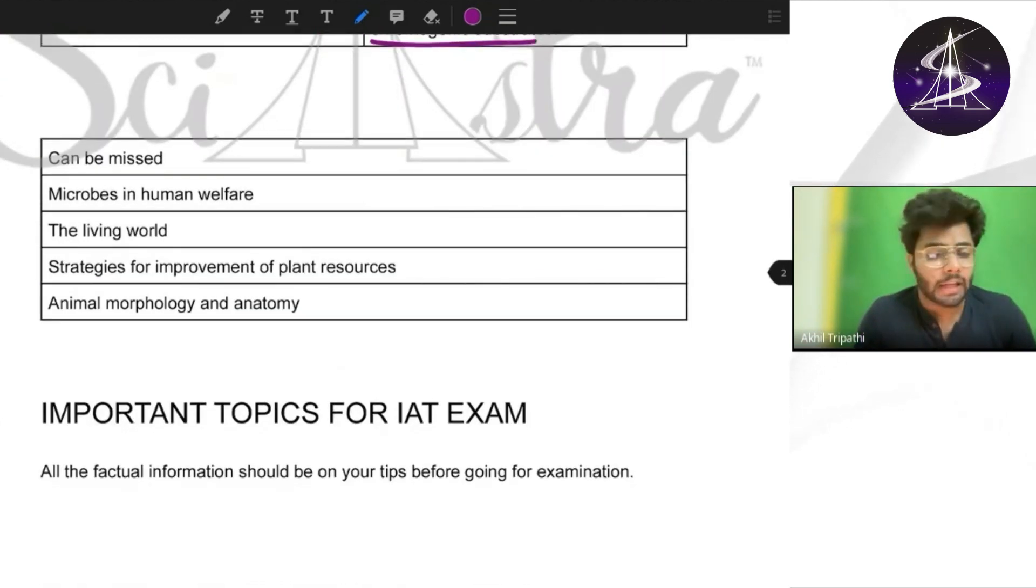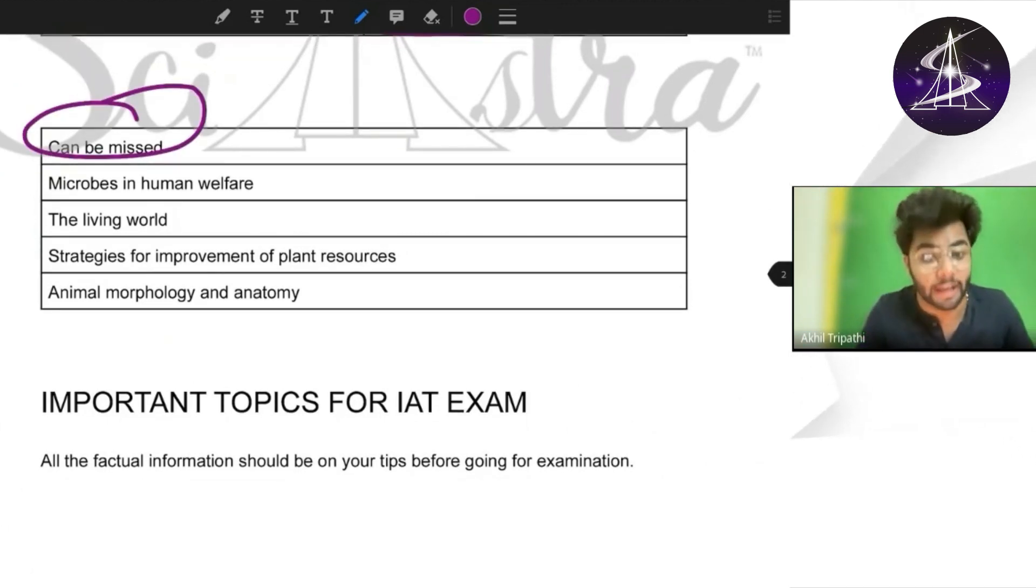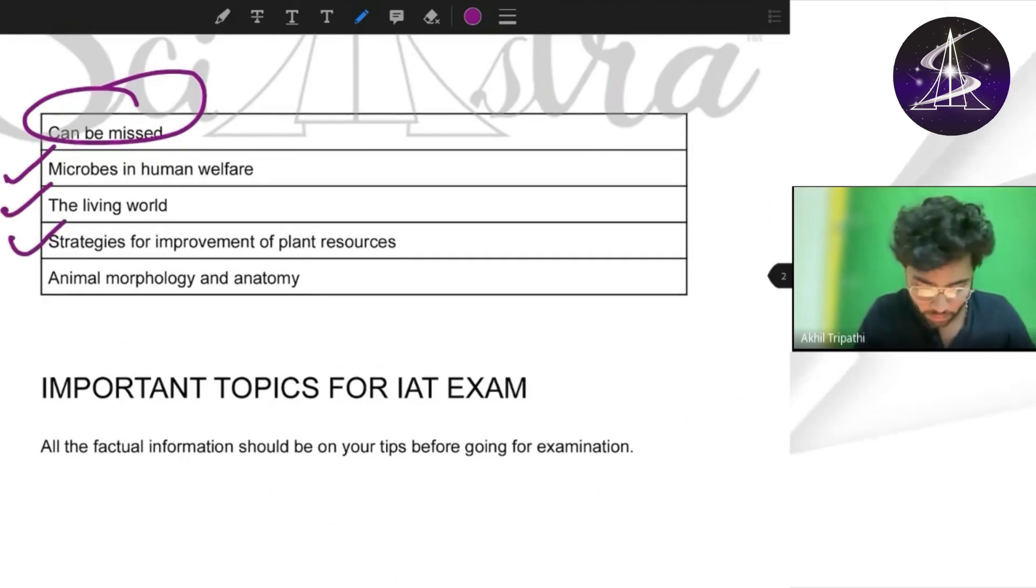Now chapters that are a bit less important - questions might come but have very less probability that can be missed if you do not have time. If you have time I would suggest you read all of these chapters. Microbes in human welfare, living world, strategies for improvement of plant resources, animal morphology and anatomy - these are least important chapters.